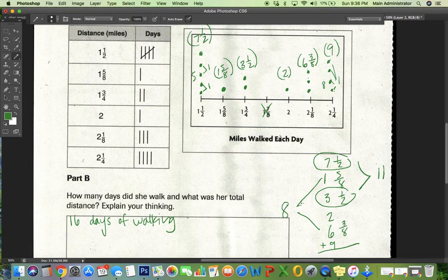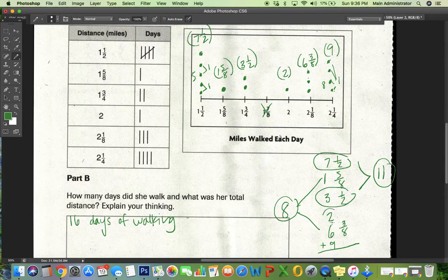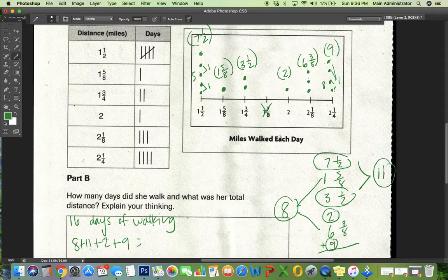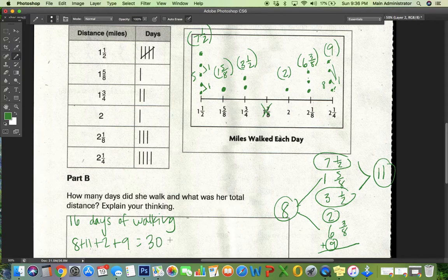Then I've got it. So I've got an eight, I've got an 11, I've got a two, and I've got a nine. So I'm going to add eight plus 11 plus two plus nine. Nine, 10, 11, 22, 30 miles.